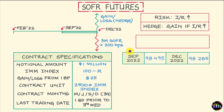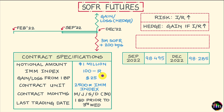Now for this hedging instrument available at this price, what should my exact position be — should it be long or should it be short? I need a hedge that gives me a gain if interest rates go up. If interest rates go up, R will go up; if R goes up, the price of my three-month SOFR futures will come down. I am looking for a hedge that gives me a gain if the futures level comes down, which means I should be entering into a short position in the September 2022 three-month SOFR futures.